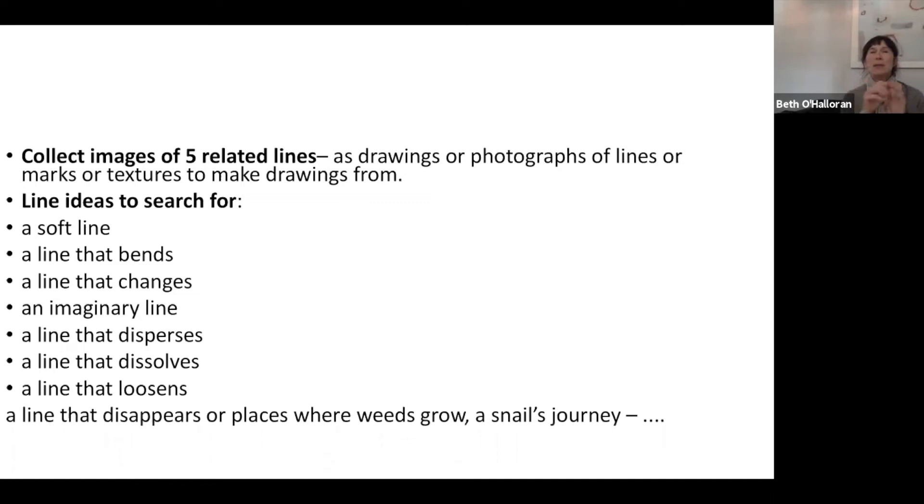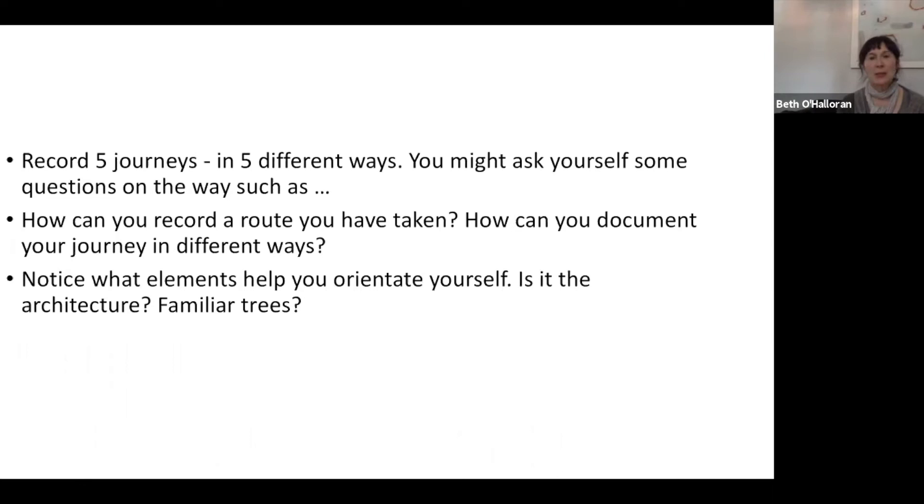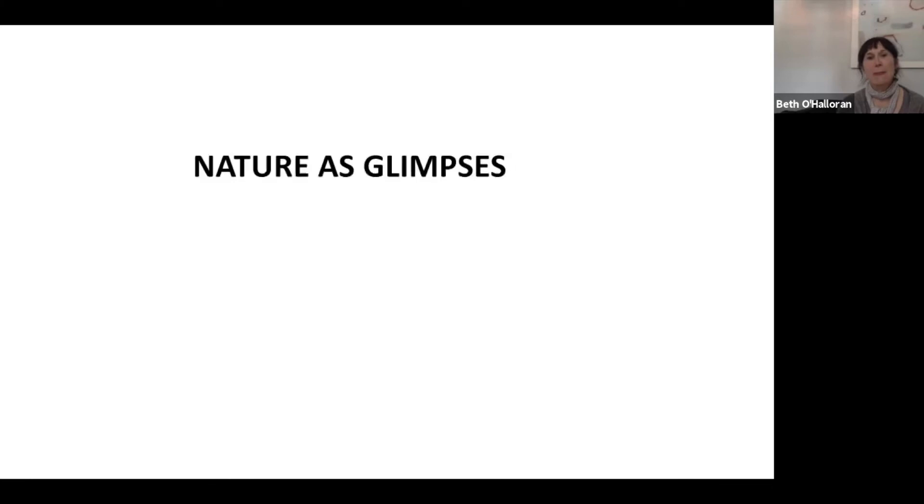These are things I was thinking about heading out. You could collect images of five related lines, marks, or textures to make drawings from. Things like, and maybe when you're thinking of line, really break that apart for yourself. All the different kinds of lines that there are. A soft line, that's going to be really nice in charcoal or pastel. A line that bends. A line that changes. An imaginary line, maybe behind a plane in the sky. A line that disperses. A line that dissolves. Or the places where weeds grow.